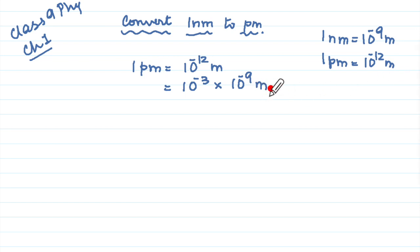Now we know that 10 to the power minus 9 meter is nanometer. So it becomes 10 to the power minus 3 and this is your nanometer.